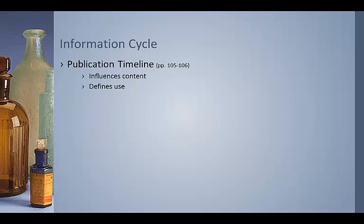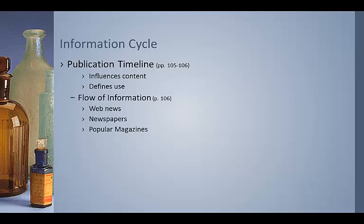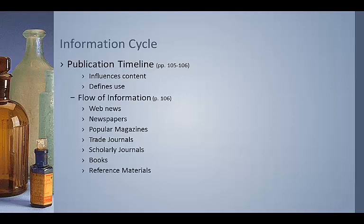The flow of information — if you think about how we get information and at what rate we get it — breaking news generally comes first through the web, and then the next day or so it will come in the newspaper. Maybe within the following week or month it will appear in a popular magazine, and trade journals will also pick it up within a few months. About six months to a year later it shows up in a scholarly journal, and then a book — perhaps one to five years to write. Finally it will show up in reference materials such as encyclopedias.